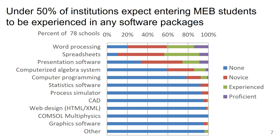In this diagram we asked about the expectations for experience with software coming into the class. The blue bars represent that we don't expect them to have any experience. The red ones are novice experience, green is experienced, and purple is proficient. Looking at all of the blue on the diagram, we don't expect very much software experience coming into the course. What we do expect some familiarity with is word processing, spreadsheets, and presentation software. Combining the red and the blue, we generally do not expect them to have much experience.